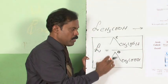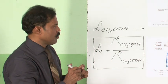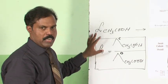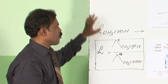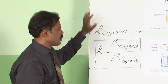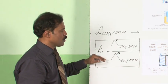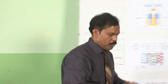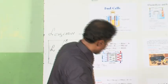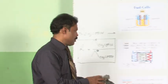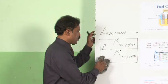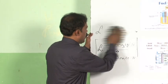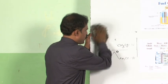So the two applications of Kohlrausch's law are: one, to find out the molar conductivity at infinite dilution of a weak electrolyte; and two, to find out the degree of dissociation of a weak electrolyte. This brings us to the end of this discussion of molar conductivity at infinite dilution.